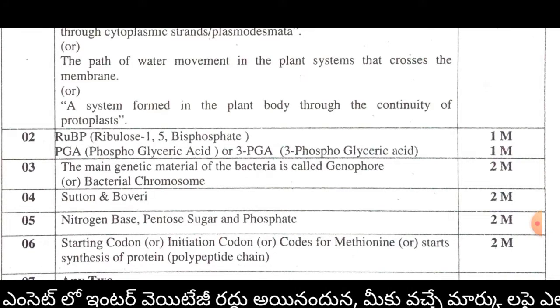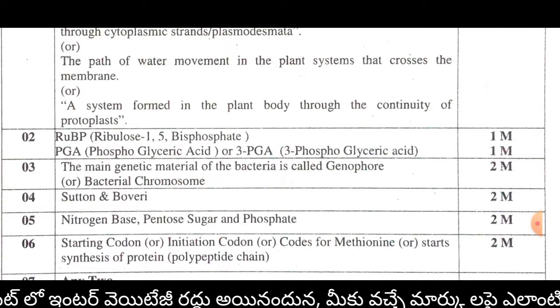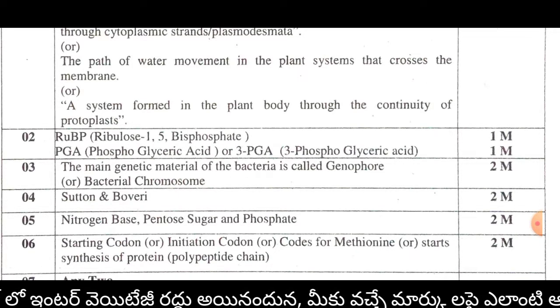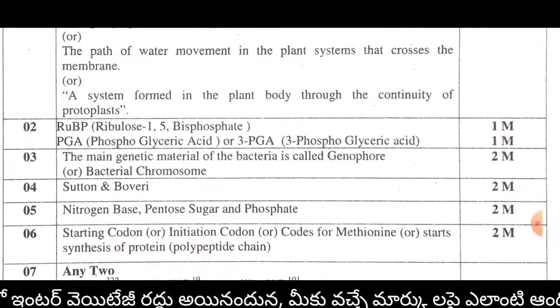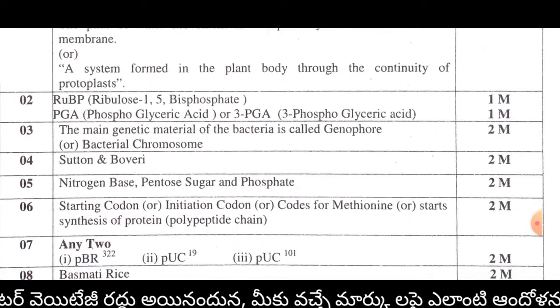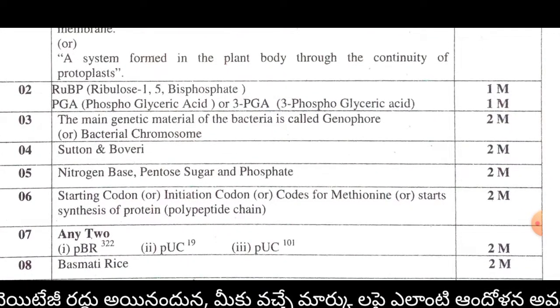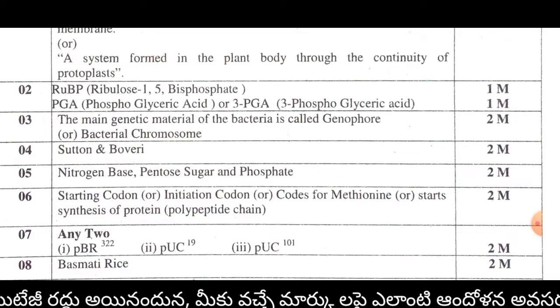The fifth question asks: what is a nucleotide? The answer is nitrogen base, pentose sugar, and phosphate. So nitrogen base, sugar, and phosphate together make up a nucleotide.